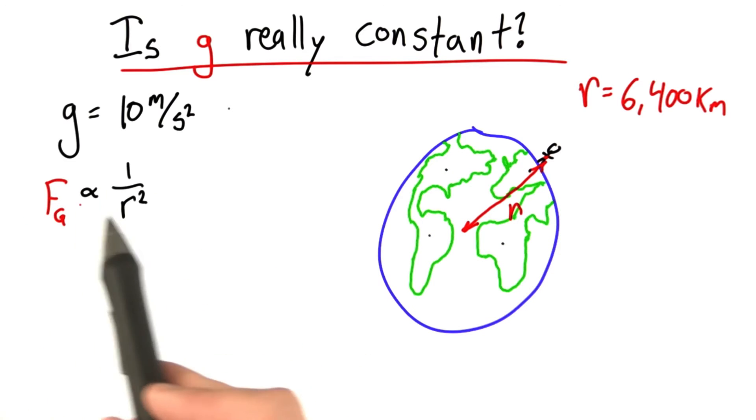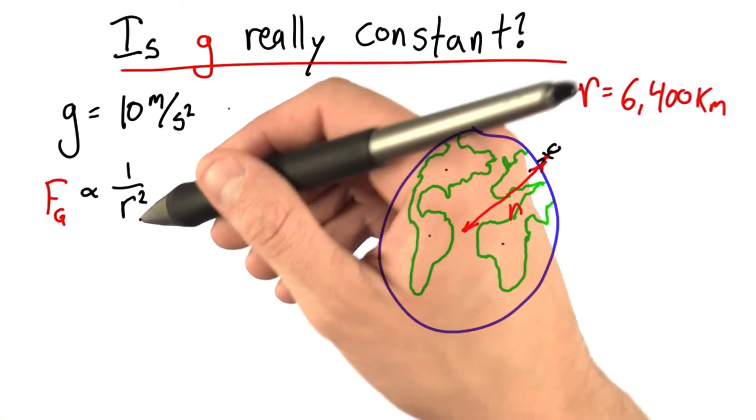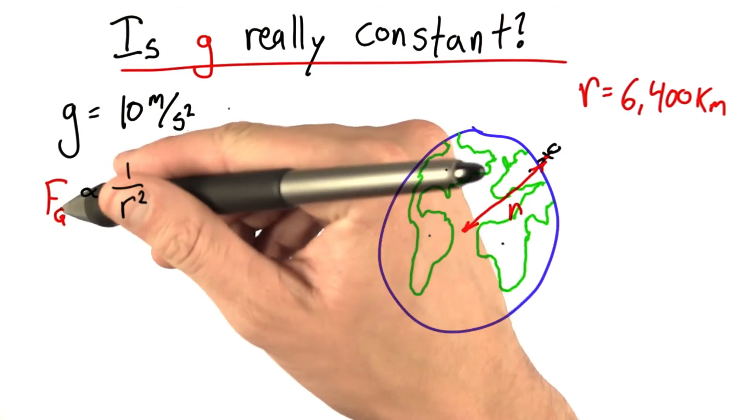Now we know that there's this strange dependence on the force of gravity. It goes like 1 over r squared. So that means if I get twice as far away, the force gets actually four times weaker.